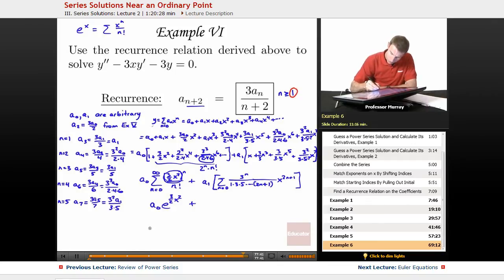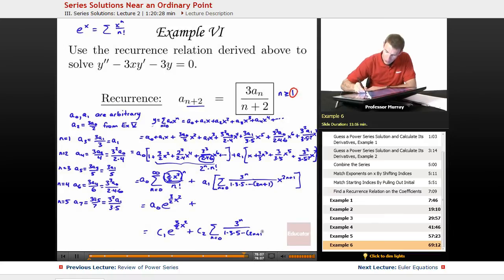And there's nothing really good happening on the right. I'm going to rewrite my two constants as C1 and C2. So C1 E to the 3 halves X squared plus C2 times this series.